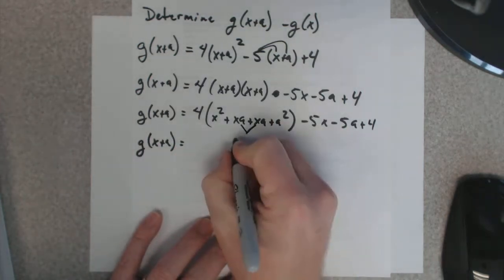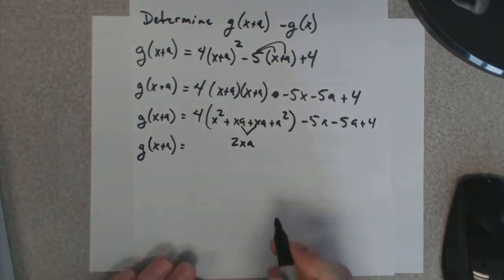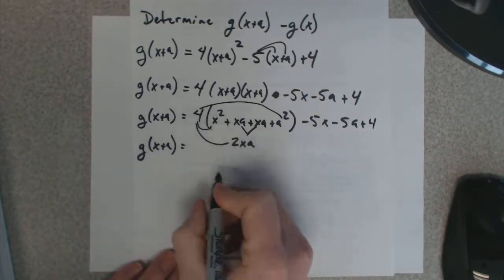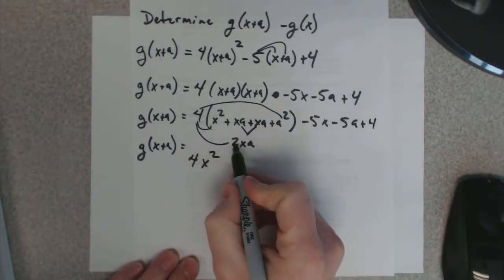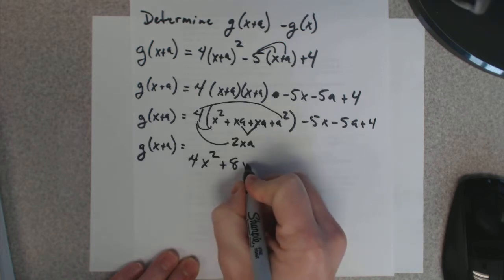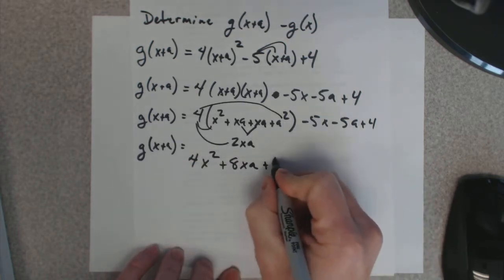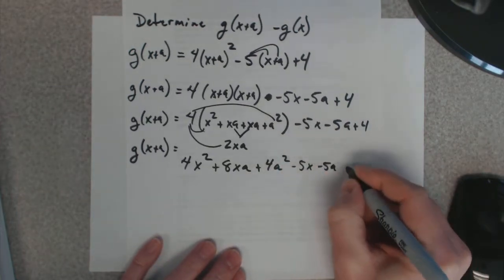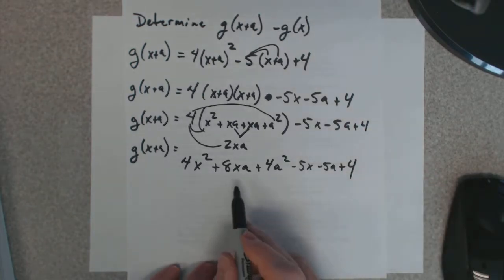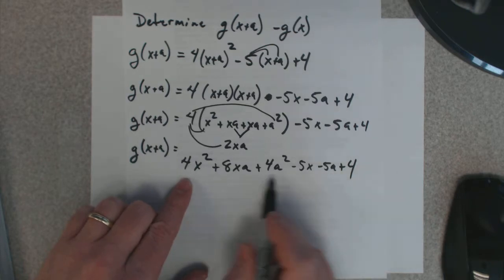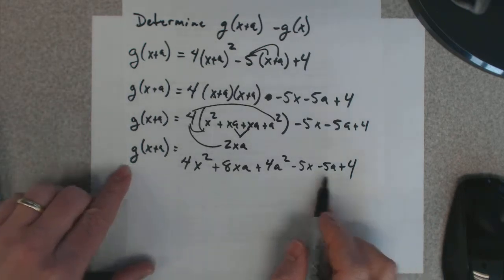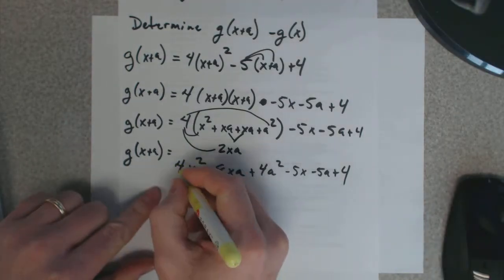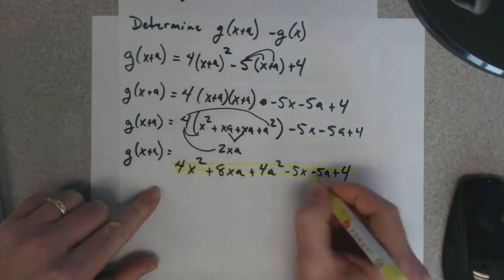These two guys go together. It's 2xa. I'm going to distribute my 4 to all three pieces. So, 4 times x squared is 4x squared. 4 times 2xa is 8xa. 4 times a squared is 4a squared. You still get a minus 5x. You still get a minus 5a. You still get a plus 4. And I don't see any like terms here. This big old thing right here is g of x plus a.